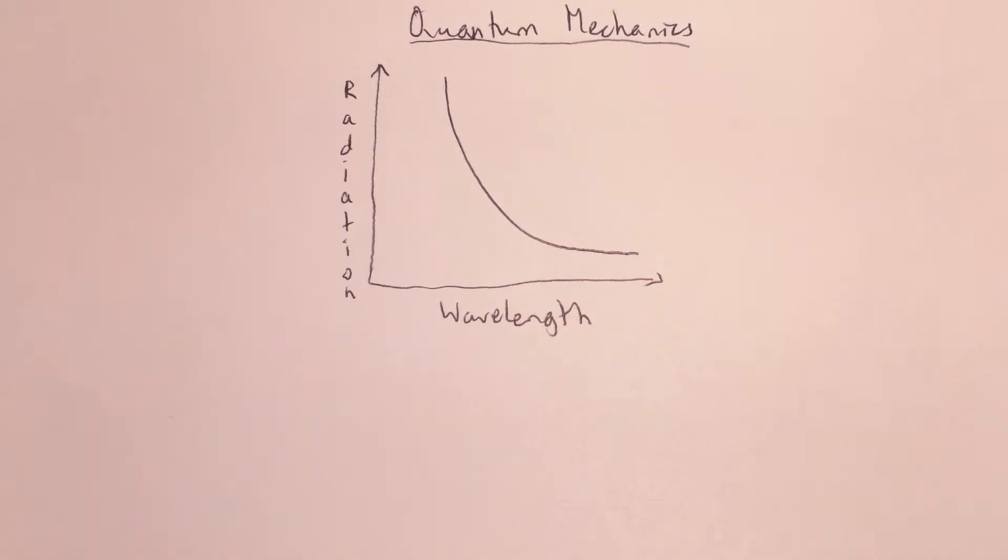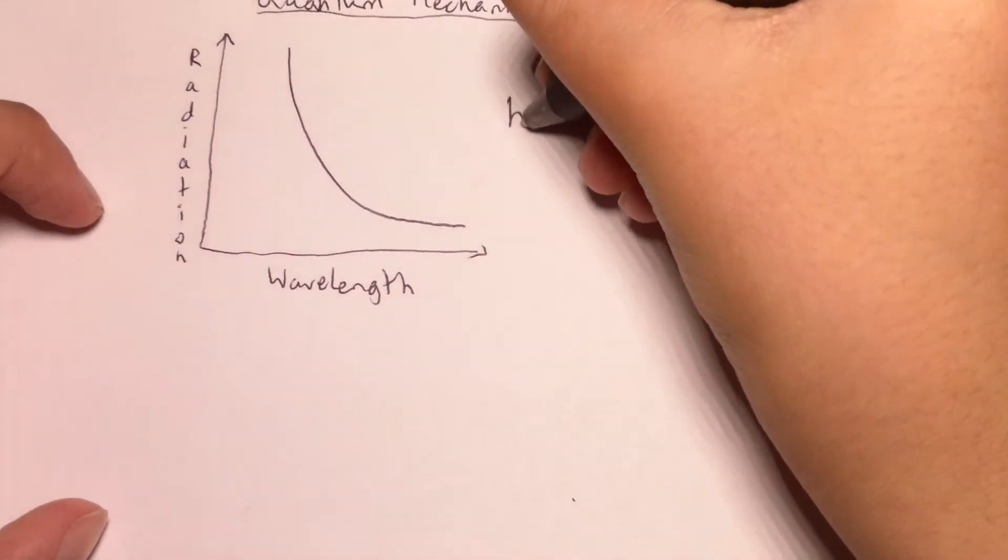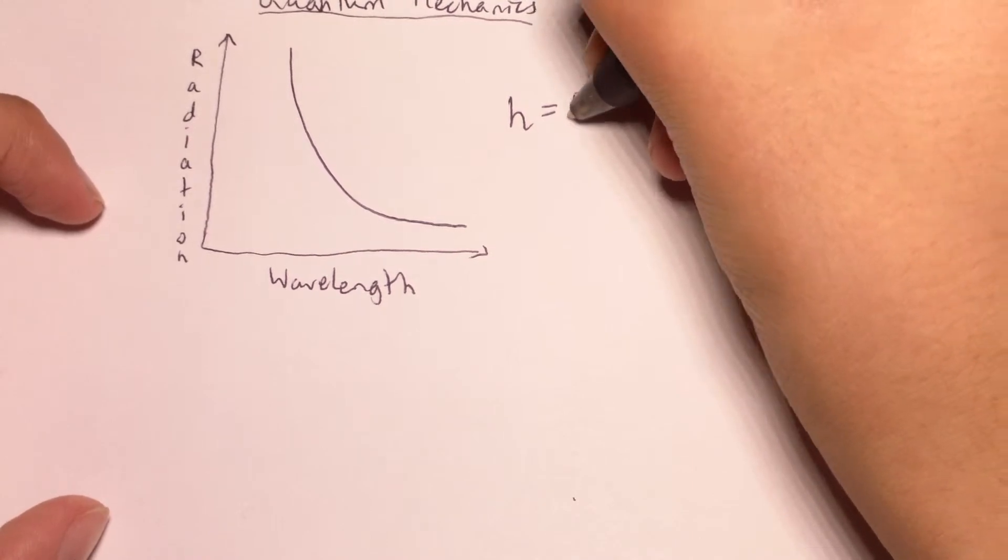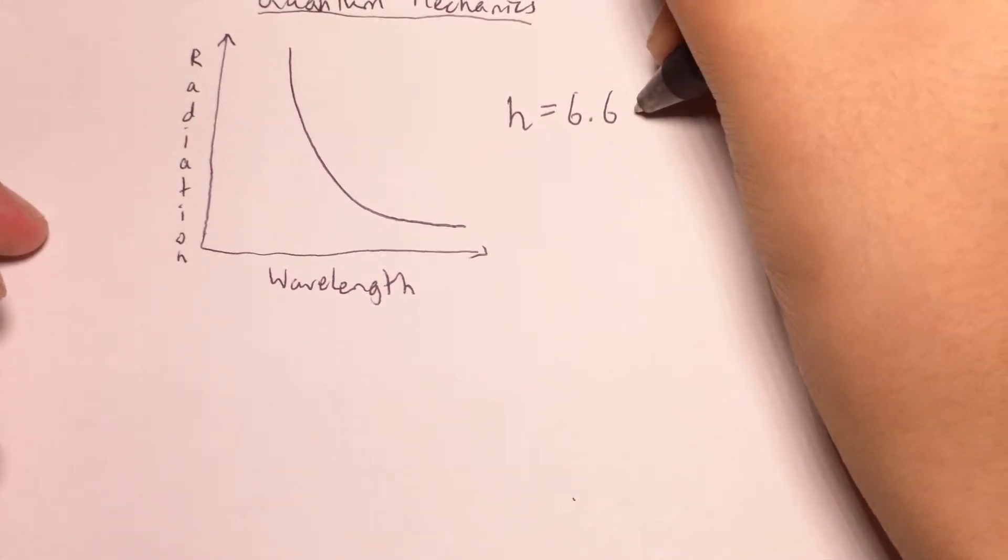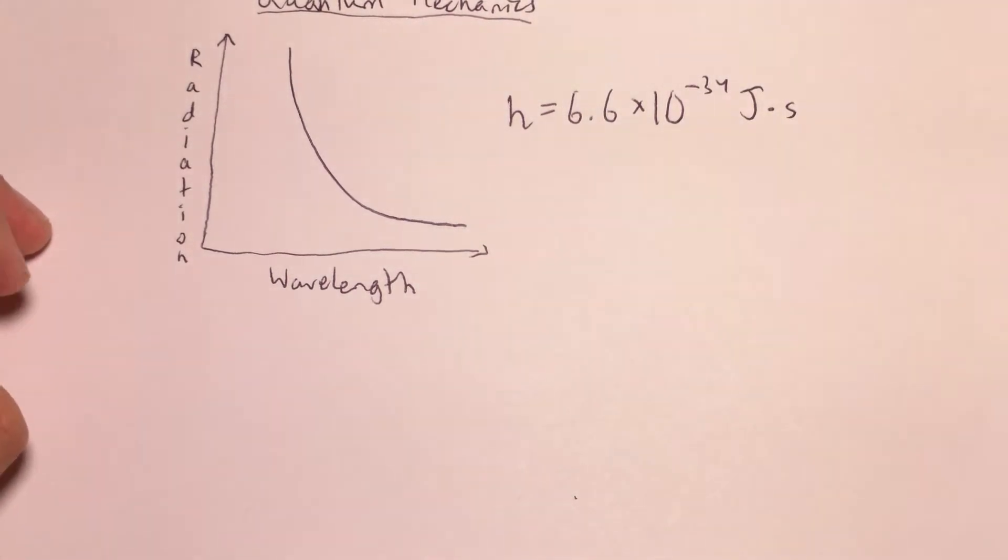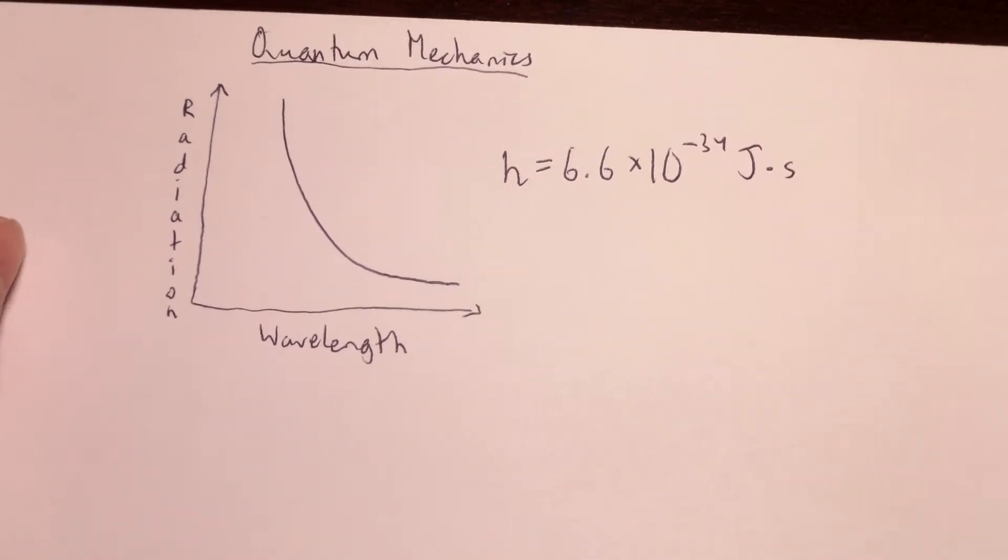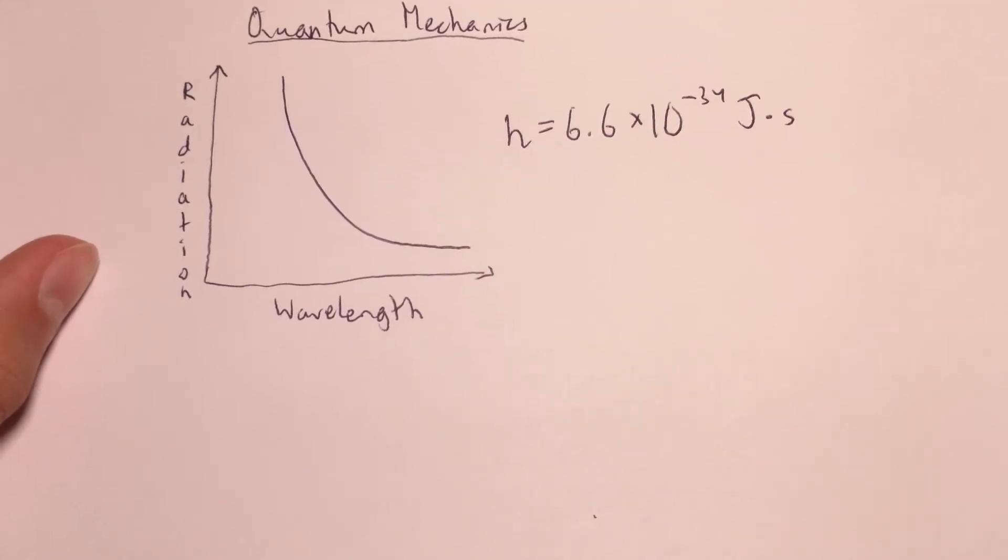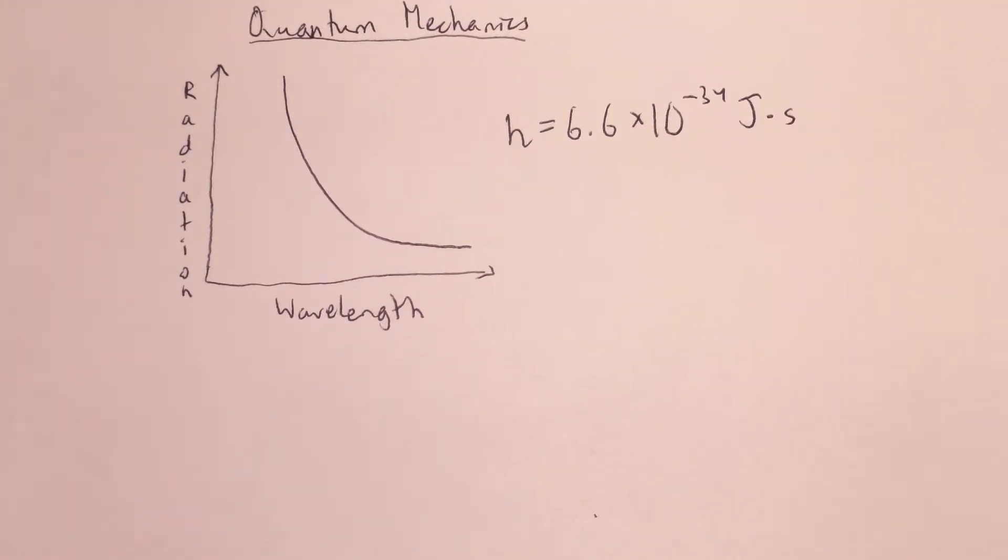So this is one place where Maxwell's theory fails. And Max Planck set it to himself to solve the problem, and he found that if you made the frequency of the light not be anything, it can't just be any random number, but it can only be integer values of something called Planck's constant, which is denoted with a lowercase h and equals, according to experimental evidence, 6.6 times 10 to the negative 34 joules times seconds. If you say that the frequency can only be in integer values of h, it fixes the data. And what this effectively means is that we're quantizing light.